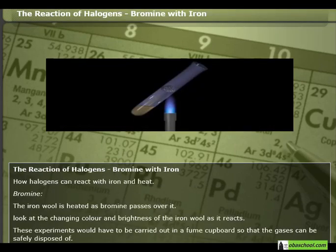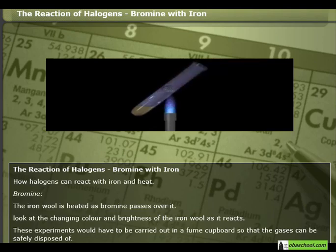How halogens can react with iron and heat — bromine. The iron wool is heated as bromine passes over it. Look at the change in colour and brightness of the iron wool as it reacts. These experiments would have to be carried out in a fume cupboard, so that the gases can be safely disposed of.